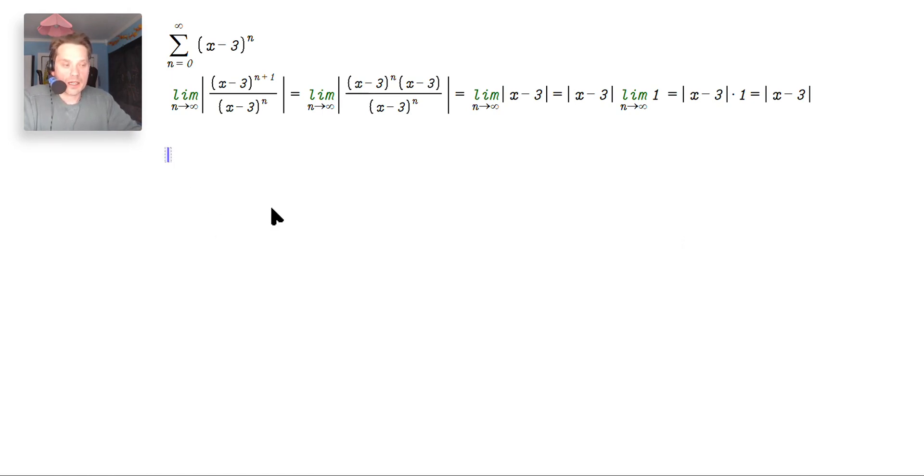So that's that now based on this for this to converge, we must have that X minus three, this quantity is less than one. So this quantity right there, the one that's our R the radius of convergence. One unit. Now we also have to check what happens at the endpoints of the interval.